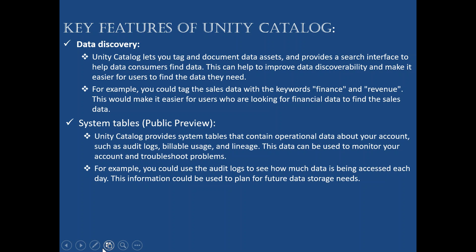System tables is still in public preview but coming soon. Unity Catalog provides system tables containing operational data about your account, such as audit logs, billable usage, and lineage. Audit logs show who did what, billable usage shows costs, and lineage shows dependencies. This operational data can be used to monitor your account, troubleshoot problems, see who is accessing what data, understand charges, and take actions for cost reduction.